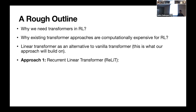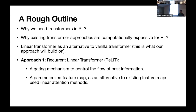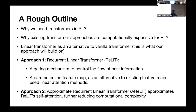We're going to discuss two approaches. The first, called the recurrent linear transformer, introduces two contributions which help it learn in the RL setting: the first is around a gating mechanism, and the second is around the kind of feature map you should use. The second approach, called the approximate recurrent linear transformer, improves upon the computational complexity of the first approach.